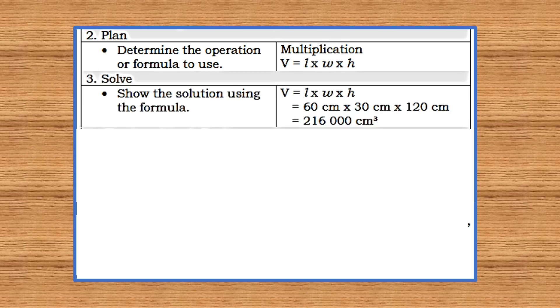Number three, solve. Show the solution using the formula. Volume is equal to length times width times height. And then let's apply: 60 cm is the length, times 30 cm is the width, times 120 cm and that is the height. So what is the answer? Very good. 216,000 cubic centimeters.